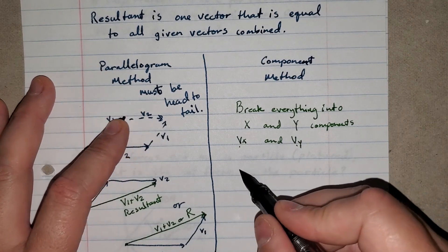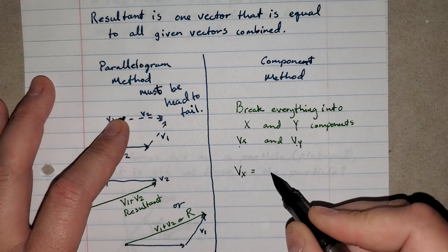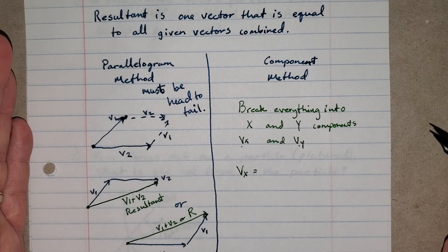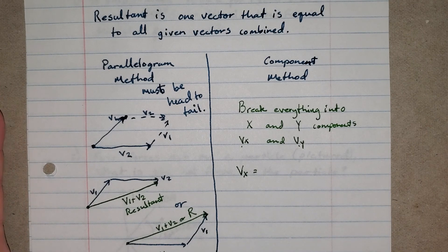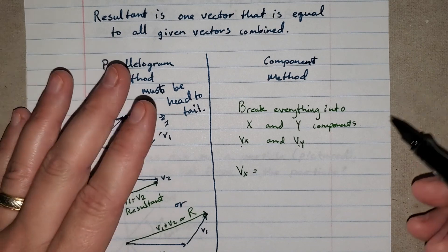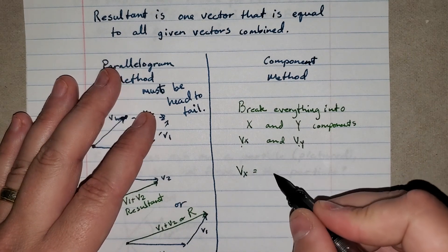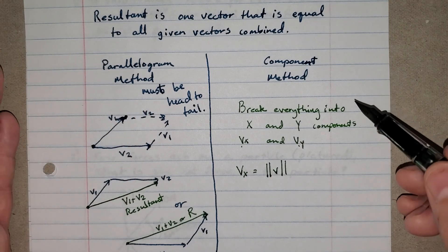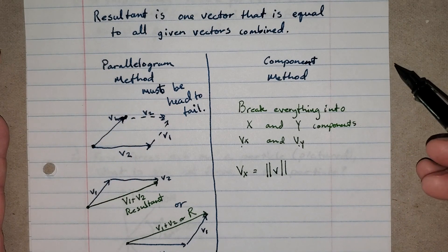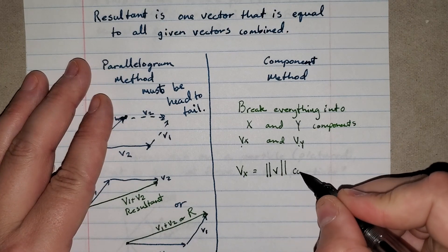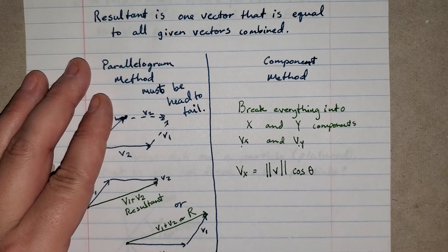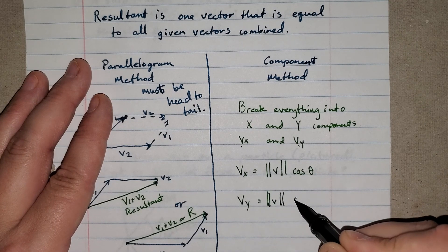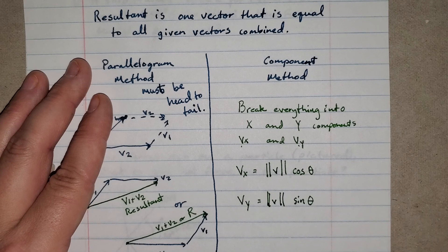There are some equations that show up in any physics or math book — I've covered these in previous vector videos. The x component, Vx, is going to be the magnitude of the vector times the cosine of the direction angle. The y component, Vy, is going to be the magnitude of the vector times the sine of the direction angle.